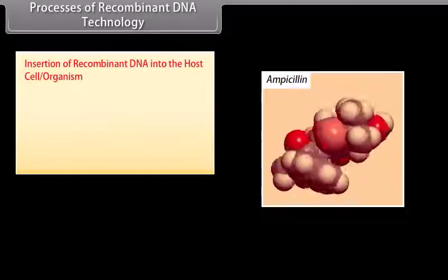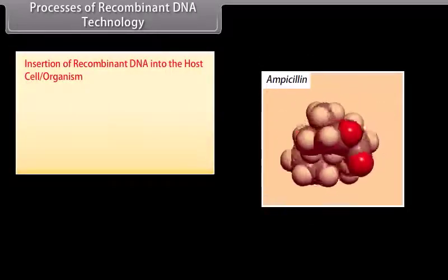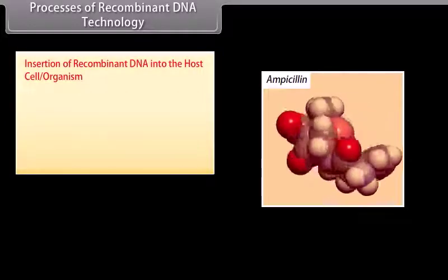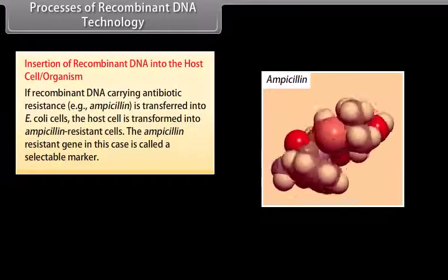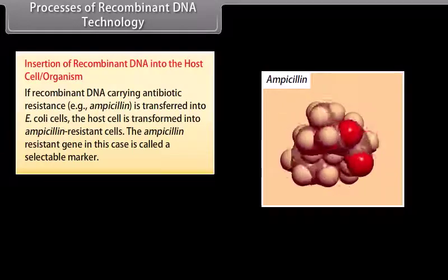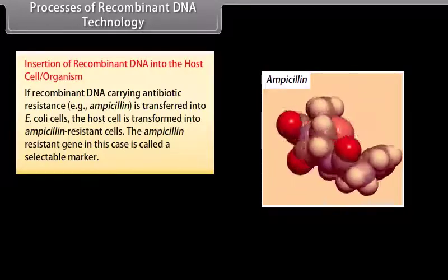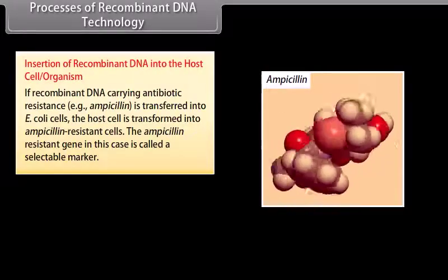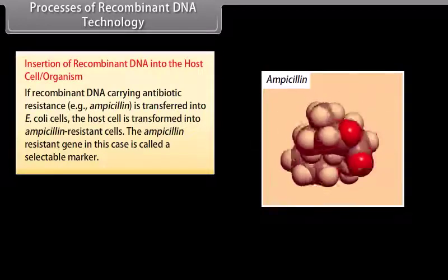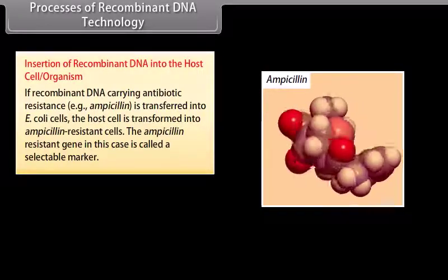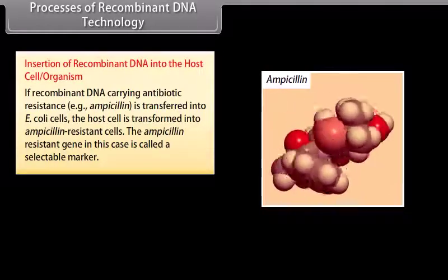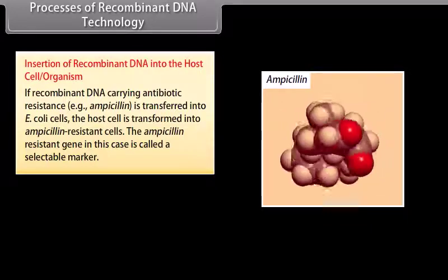Processes of recombinant DNA technology. Insertion of recombinant DNA into the host cell organism. If recombinant DNA carrying antibiotic resistance, that is, ampicillin, is transferred into E. coli cells, the host cell is transformed into ampicillin-resistant cells. The ampicillin-resistant gene in this case is called a selectable marker.